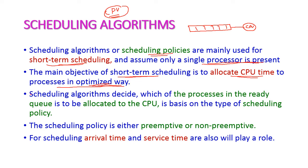The scheduling algorithm decides which process in the ready queue is to be allocated to the CPU, based on the type of scheduling policy. Based on the scheduling policy, the scheduler will select any process in the ready queue for CPU execution. The scheduling policy is either preemptive or non-preemptive, as we have already seen in our previous class. For scheduling, arrival time and service time are also important.